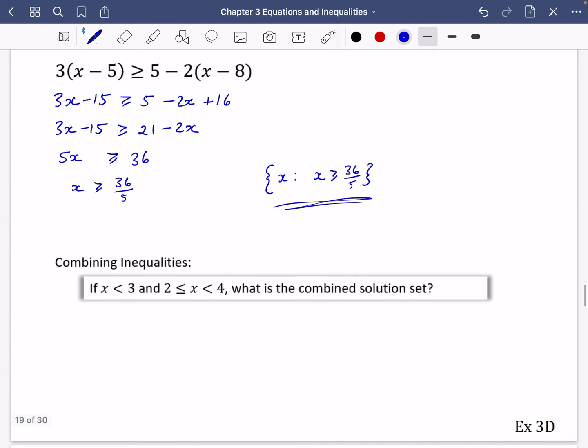Okay, and then this one says if X is less than minus three and X is between minus two and four, what is the combined solution set? So you've just got to think about what it's really talking about here. Because you're going to do some questions in exercise 3D where you will solve two simultaneous equations and come up with two answers. And then you need to give them the combined answer.